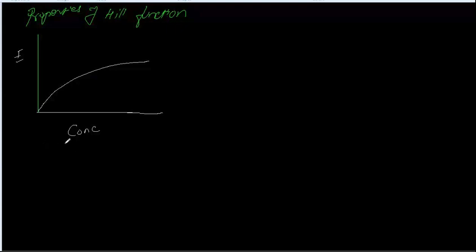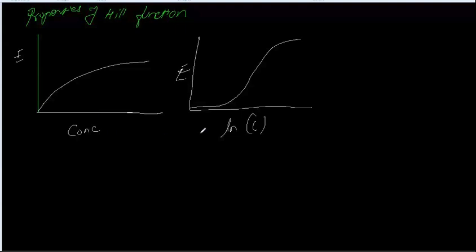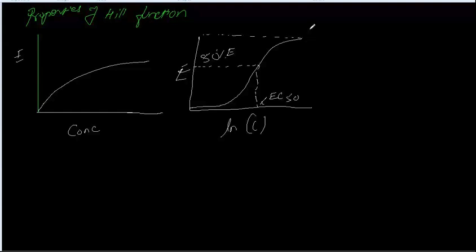But if we apply the natural log on the x-axis, our Emax graph will look something like this. So here, the EC50 value is the midpoint concentration — the concentration at which 50% of the effect is achieved is called EC50. And the maximum effect is Emax.